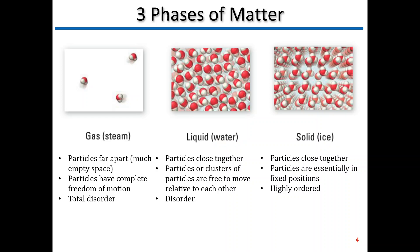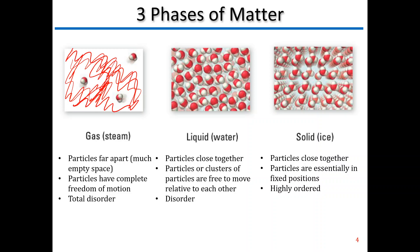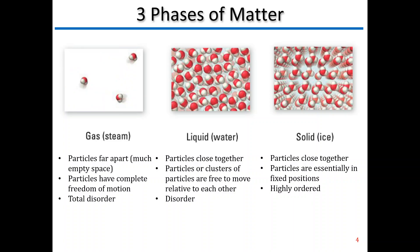Let's look at a gas first. One of the first things you'll notice is that we have tons and tons of empty space — everything I'm highlighting in red here is all empty space. The particles are very, very far apart. In fact, a gas is mostly made up of empty space. They have complete freedom of motion and are in total disorder. There's very little — we would actually say no — interaction between two molecules. One molecule of the gas is not preventing the other from moving around. The only time they interact is when they run into each other.